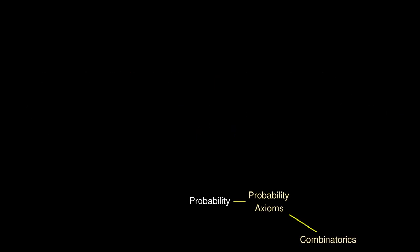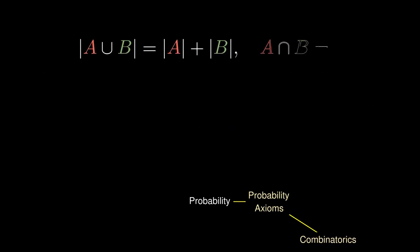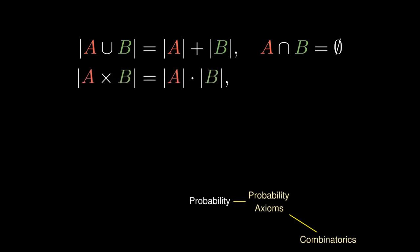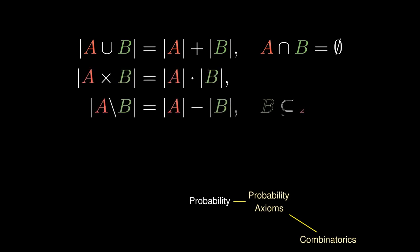With combinatorics, we have the addition principle for counting, the multiplication principle for counting, and the complementation principle for counting, which helps us define the probability of an event by the number of items in that event.